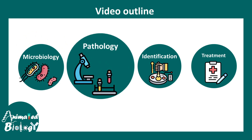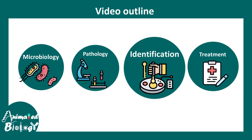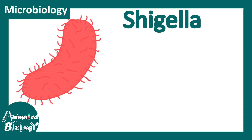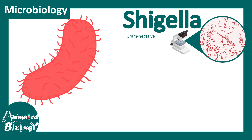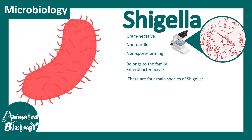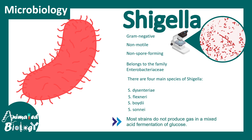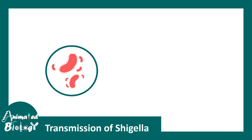In this video we'll cover the microbiology, pathology, identification of Shigella, and ultimately the treatment of shigellosis. Shigella is a gram-negative, rod-shaped bacteria, clearly visible under microscopic staining. It is non-motile, non-spore forming, and belongs to the family Enterobacteriaceae — a close cousin of Salmonella. There are mainly four species of Shigella: S. dysenteriae, S. flexneri, S. boydii, and S. sonnei. Most strains do not produce gas in mixed acid fermentation of glucose.